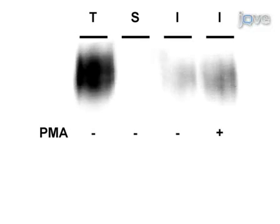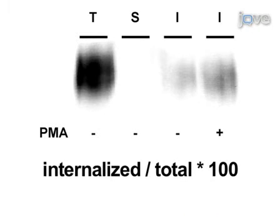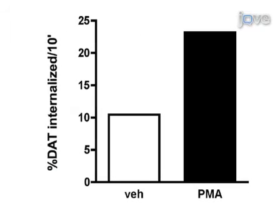The bands of lesser intensity are the internalization lanes from the experimental plate. Cells were treated with either vehicle solution or 1 micromolar PMA during a 10-minute internalization, and dopamine transporter internalization rates were measured. The internalization rate is calculated using band density measurements. As seen in this graph, 10.4% of surface DAT internalized over 10 minutes under vehicle-treated conditions, but PMA treatment increased DAT internalization rates to 23.2% of total surface DAT.